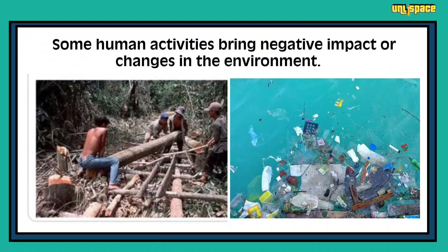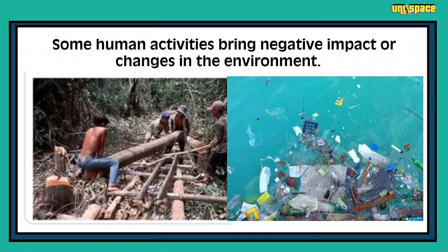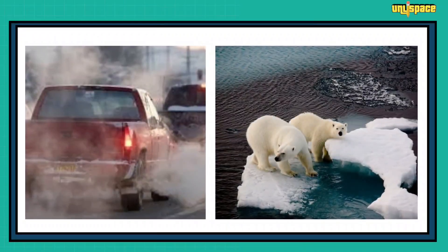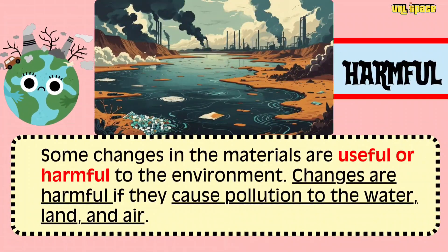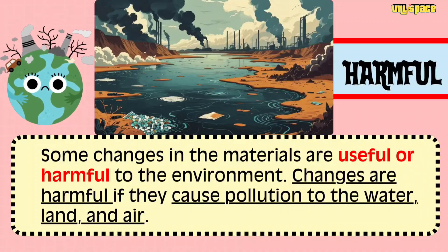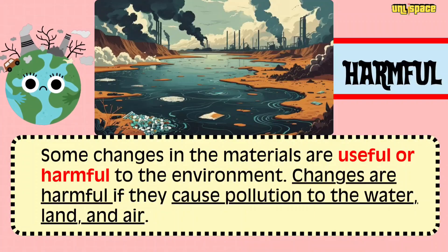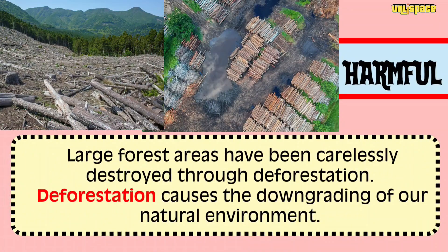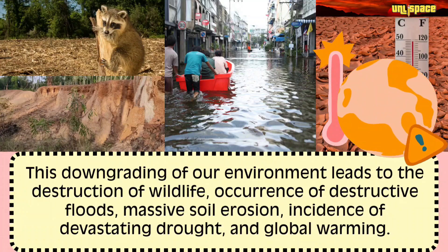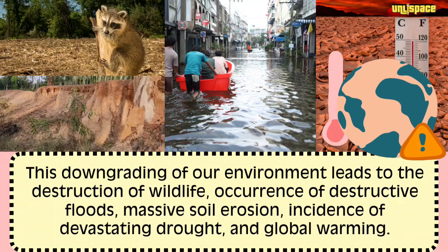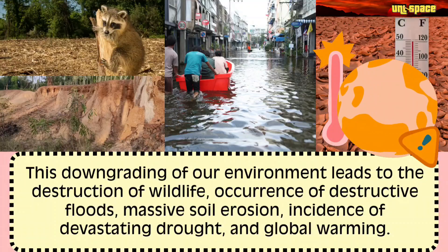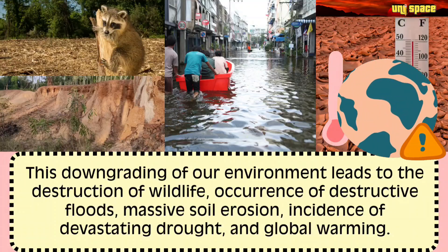Some human activities bring negative impact or changes in the environment. Some changes in materials are useful or harmful to the environment. Changes are harmful if they cause pollution to the water, land, and air. Large forest areas have been carelessly destroyed through deforestation. Deforestation causes the downgrading of our natural environment, leading to the destruction of wildlife, occurrence of destructive floods, massive soil erosion, incidence of devastating drought, and global warming.